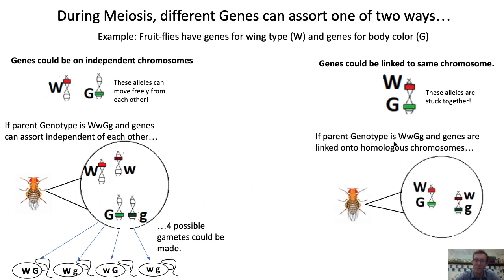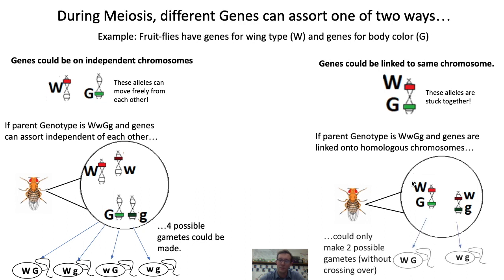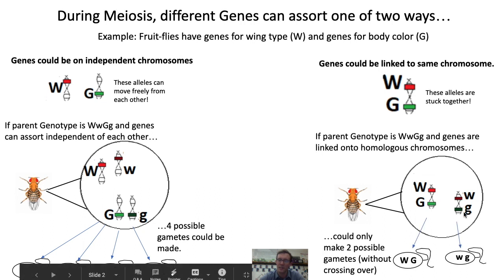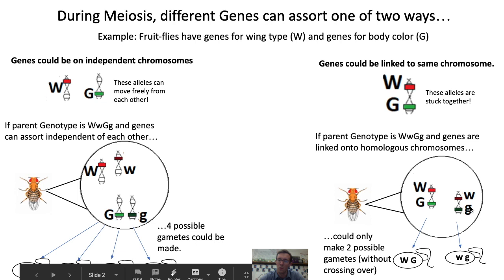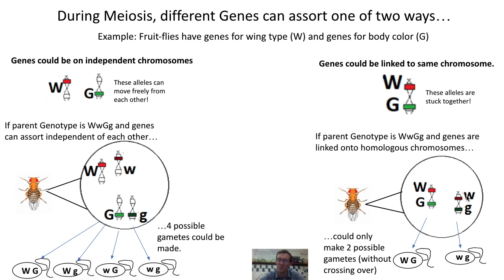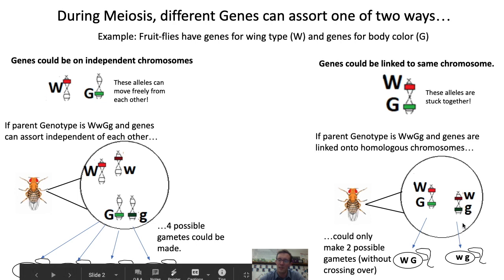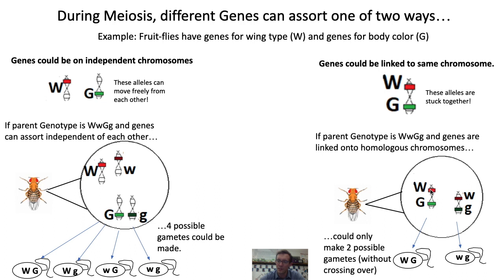Whereas if the parent has the same genotype but the genes are linked onto homologous chromosomes, then there are really only two possible gametes that the parent could make during meiosis. It could either donate its chromosome with both dominant alleles, or it could donate its chromosome with both recessive alleles. But unless crossing over occurred, this parent wouldn't be able to donate a dominant allele and a recessive allele at the same time — it could only donate both dominants or both recessives.